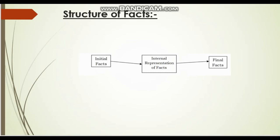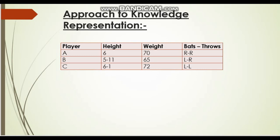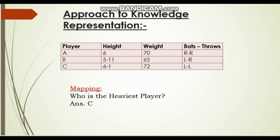The structure of a fact is: initial facts are given, internal representation of the facts is made, and final facts are generated. For the approach to knowledge representation, suppose three players are given with their heights and weights in tabular format. To find the heaviest player we compare weights, fetch the maximum weight — here 72 — and find the corresponding player name, which is C.